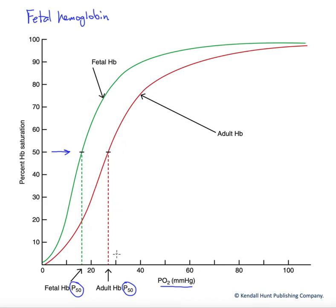If we pick a partial pressure of oxygen at the placenta, 30 is a relatively common value for placental PO2. If we go upward here, we can see that our maternal hemoglobin would be about 60% saturated at that partial pressure of oxygen.